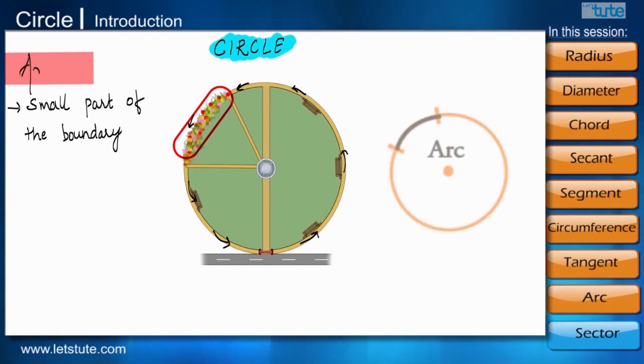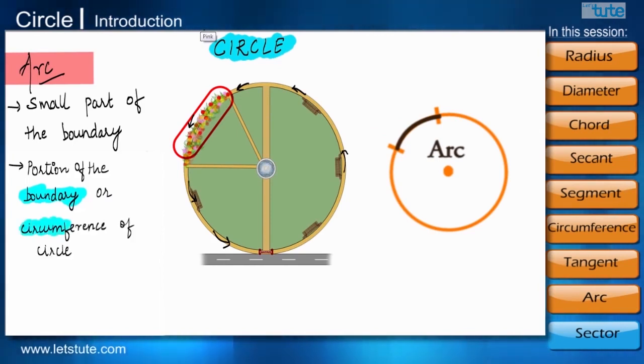And so friends, it is called as an arc itself. An arc is the portion of the boundary or the circumference in the circle.